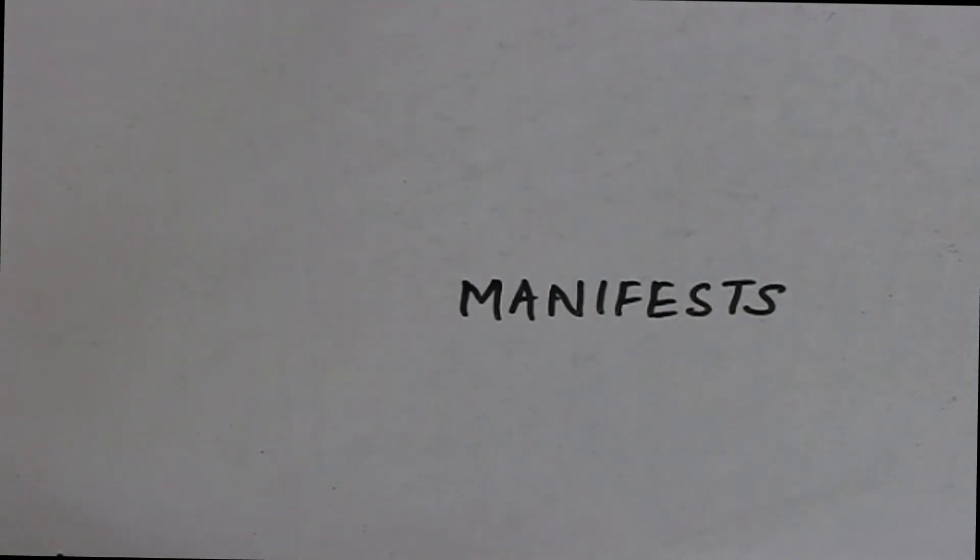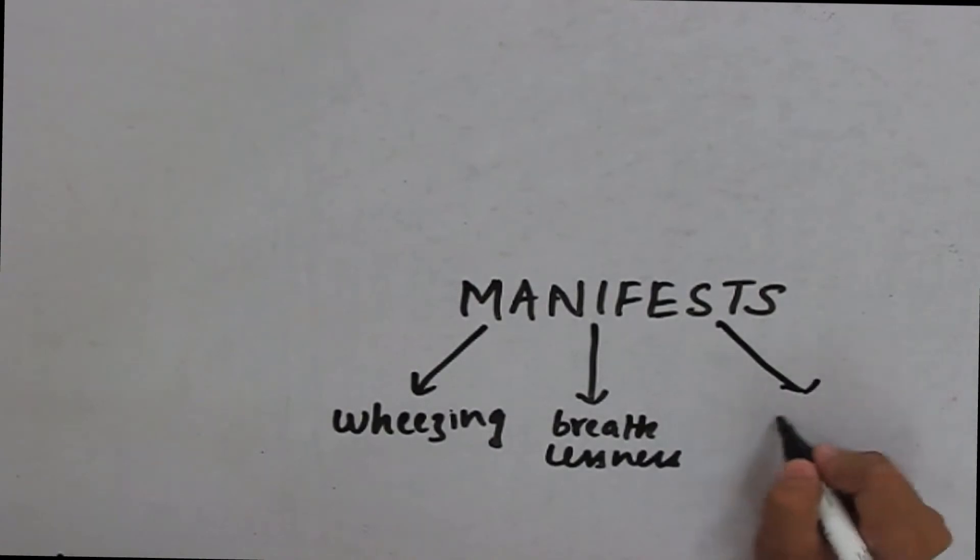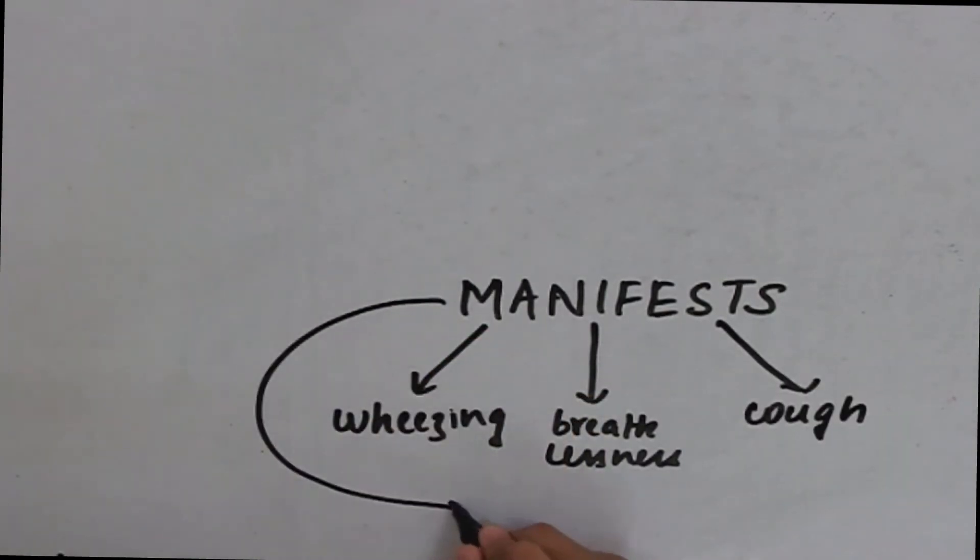Usually, the patients with bronchial asthma have the following symptoms: they have wheezing, breathlessness, cough, and tightening of the chest. Now, let us learn about the classification of asthma.